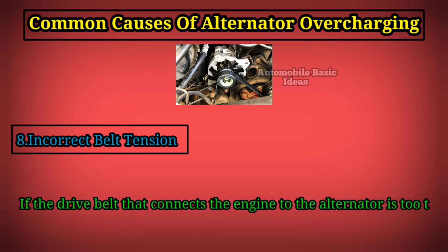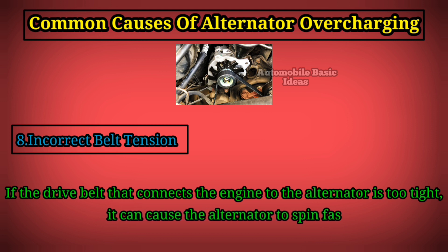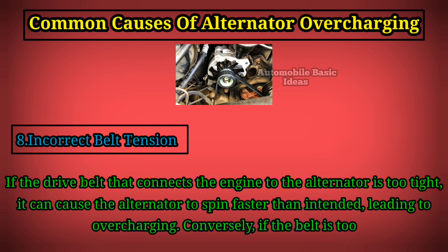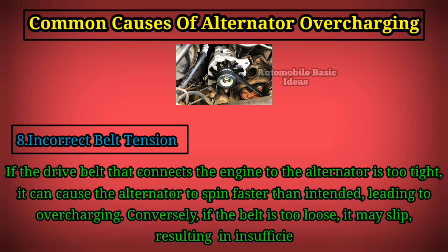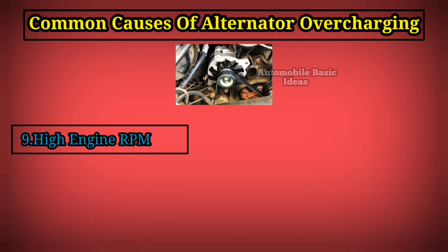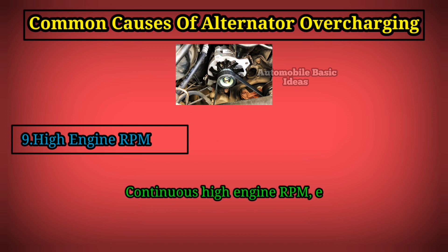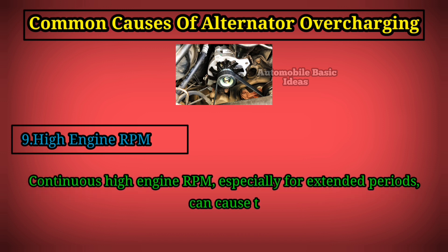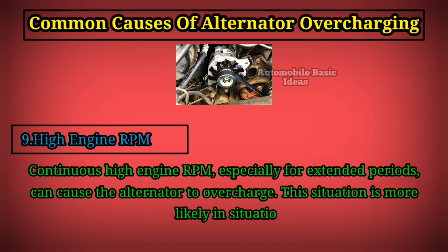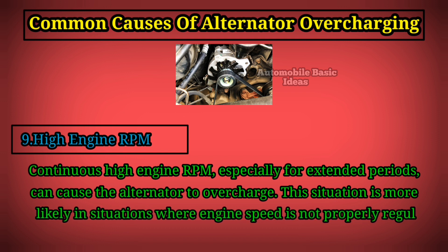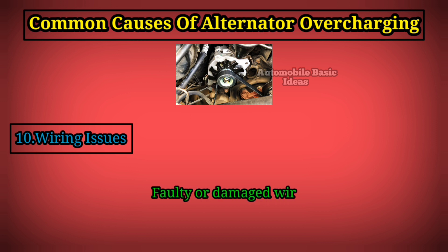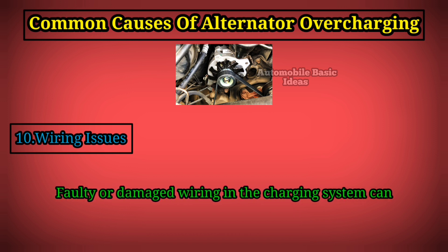8. Incorrect belt tension: If the drive belt that connects the engine to the alternator is too tight, it can cause the alternator to spin faster than intended, leading to overcharging. Conversely, if the belt is too loose, it may slip, resulting in insufficient charging. 9. High engine RPM: Continuous high engine RPM, especially for extended periods, can cause the alternator to overcharge, particularly when engine speed is not properly regulated.